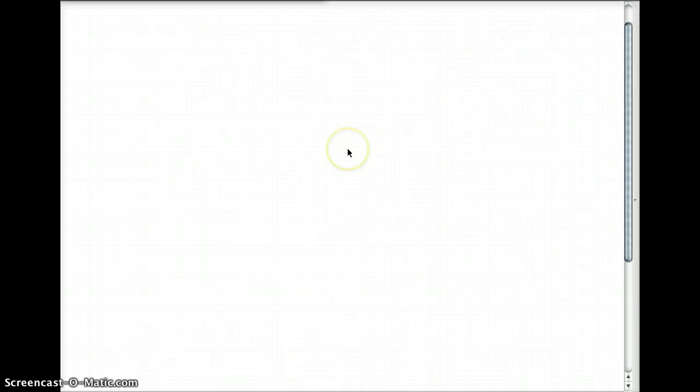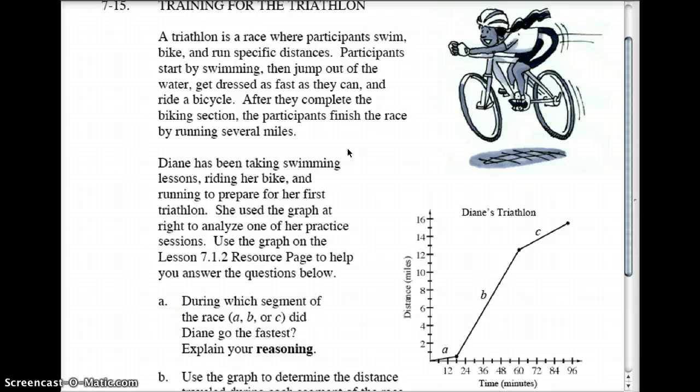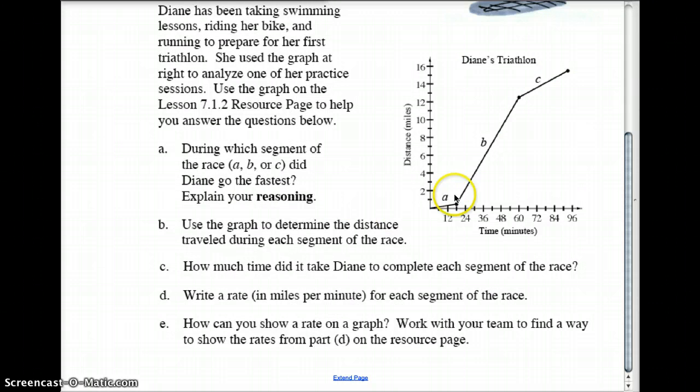All right, let's try another one. Question number 15. We're talking about a triathlon. For those of you that don't know what a triathlon is, a triathlon is an event where the athletes swim, then they ride a bike, and then they run.